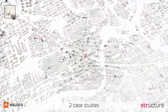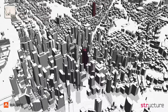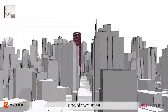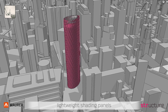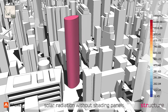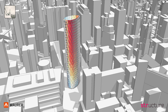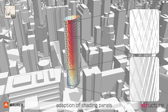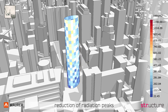Two high-rise structures located in an urban wind flow environment with varying conditions are designed for the current study. The first high-rise structure is located in a downtown area where the flow is dominated by turbulent wake regions of nearby buildings. The facade is developed using translucent lightweight panels. Parametric algorithms are used to analyze the solar radiation on the facade without shading panels. Based on this analysis, width and angle of the shading panels are adapted, reducing radiation peaks while saving material for shading.